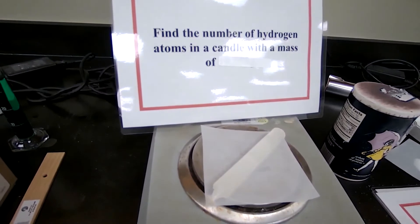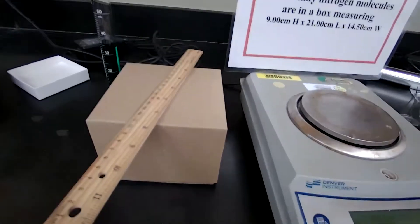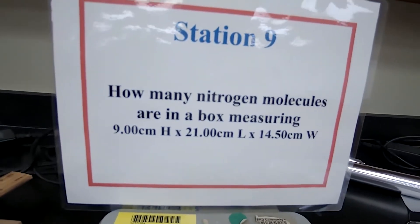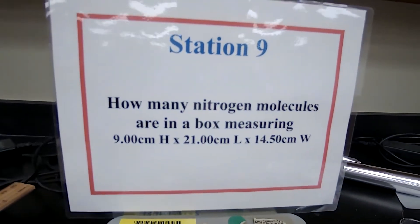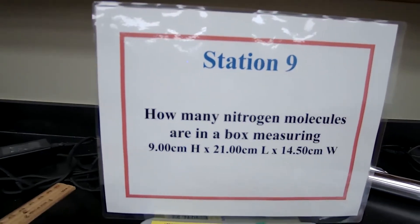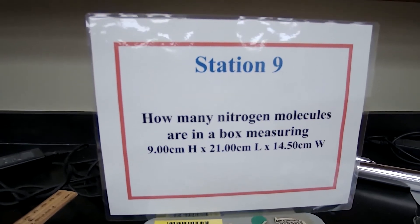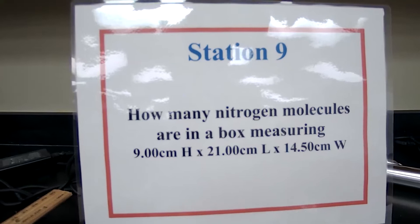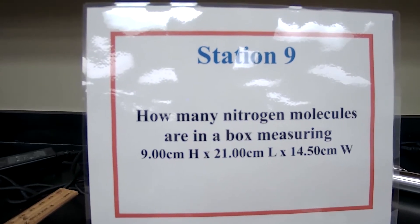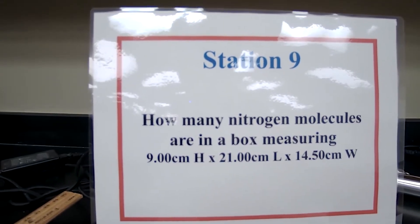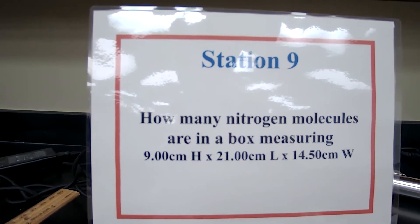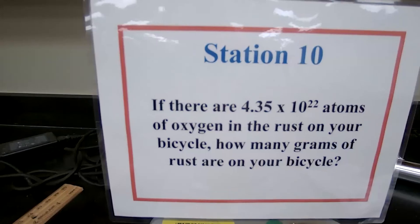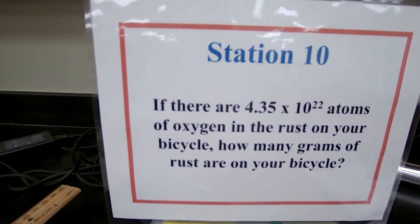For station 9, there is a box and the measurements are already given — I made the measurements for the height, length, and width of the box because getting the exact number from the ruler would be difficult. You need to do the calculation for the mass of the air, convert the mass of nitrogen, and answer the question.